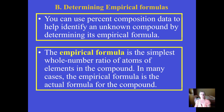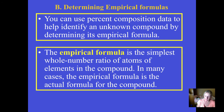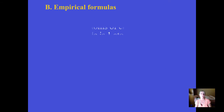If someone gives you the percent composition of a substance, you should be able to determine what we call its empirical formula. The empirical formula is the smallest or simplest whole number ratio of all of the atoms of the elements in the compound. Let's take a look at an example of that.